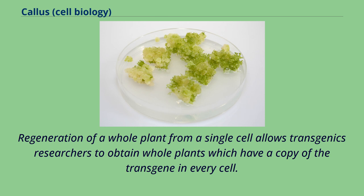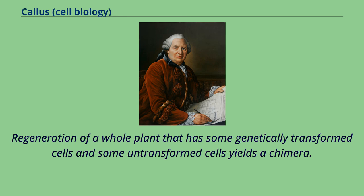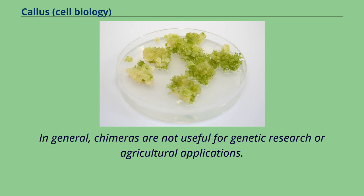Regeneration of a whole plant from a single cell allows transgenic researchers to obtain whole plants which have a copy of the transgene in every cell. Regeneration of a whole plant that has some genetically transformed cells and some untransformed cells yields a chimera. In general, chimeras are not useful for genetic research or agricultural applications.